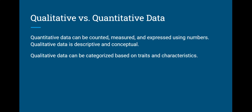The first distinction we're going to make is between qualitative and quantitative data. Qualitative data refers to essentially traits and characteristics about a country that are not rooted in numbers or data — it's sort of thematic in its nature. Whereas quantitative data, close to the word 'quantity,' can be counted, measured, or expressed using numbers. So qualitative data is descriptive and conceptual, while quantitative data is based on numbers.